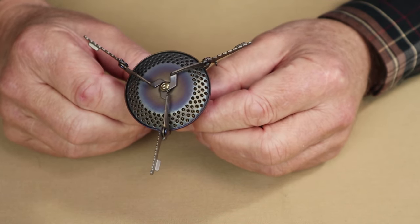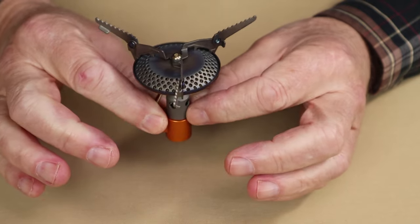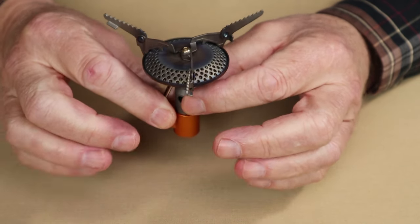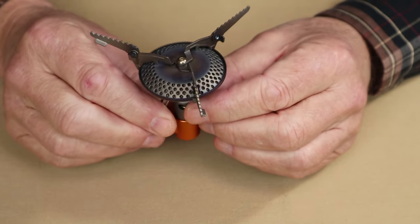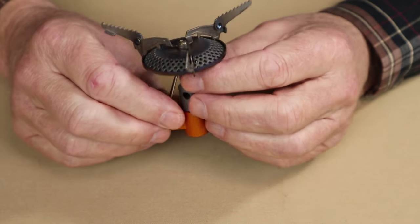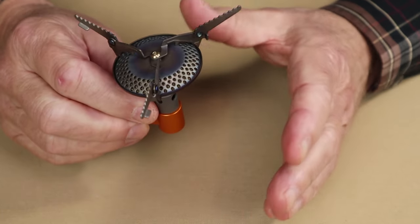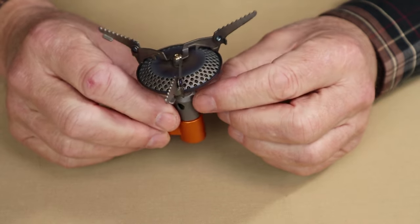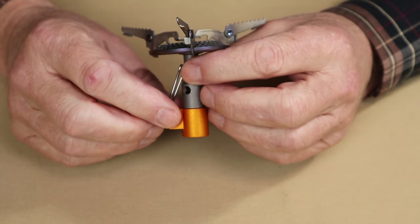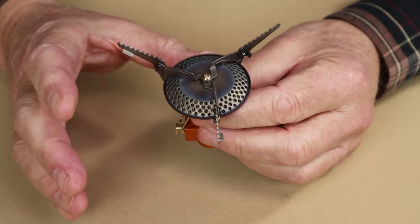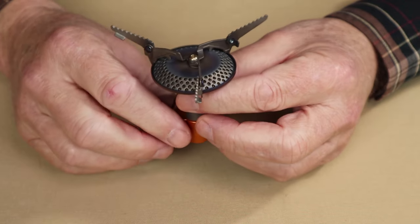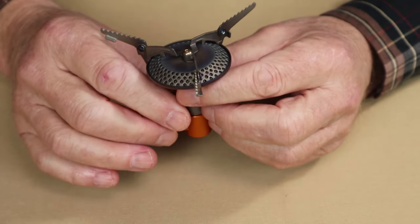It is made of primarily titanium, but there is also aluminum, stainless steel, and copper in its construction. There are no stoves that I'm aware of that are 100% titanium, and this is no different. However, they've done a good job of maximizing the amount of titanium to lighten the stove weight as much as possible.